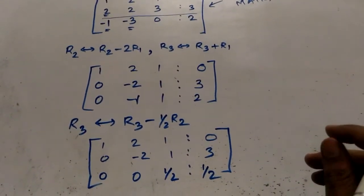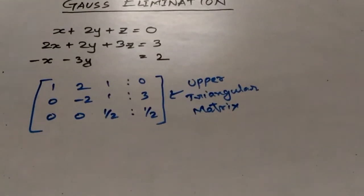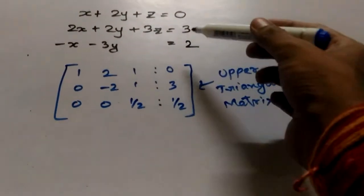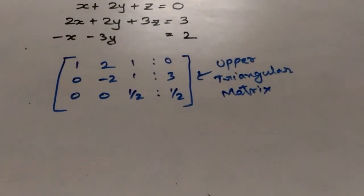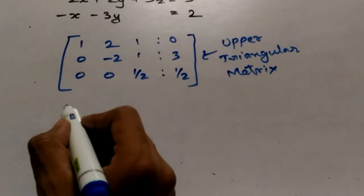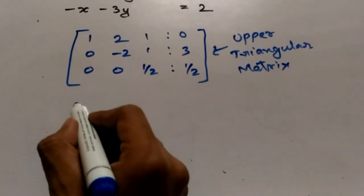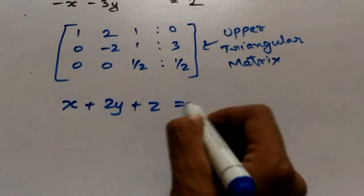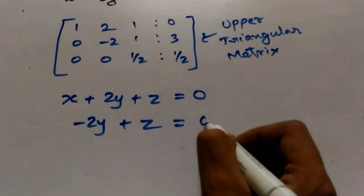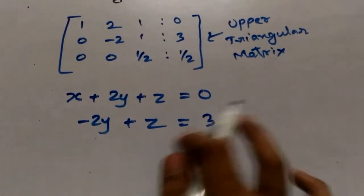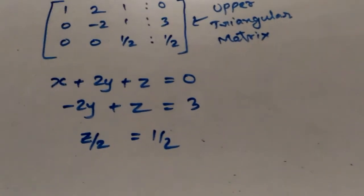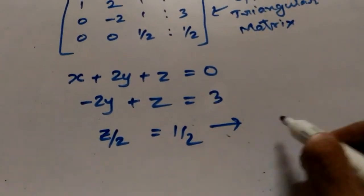Now we have the upper triangular matrix. We will reform the equations from it by putting back the coefficients of x, y, z and the constant terms. From the first row we get x plus 2y plus z equals 0. From the second row we get minus 2y plus z equals 3. From the third row we get z over 2 equals one-half, so from the third equation z equals 1.